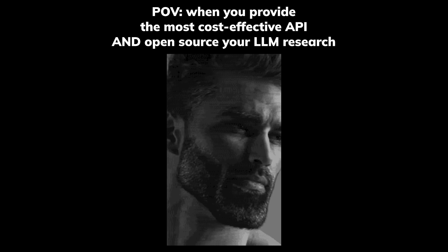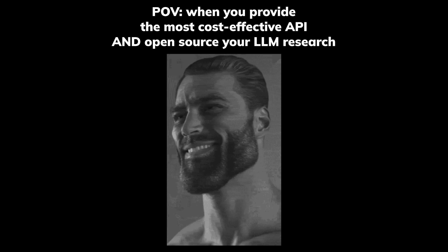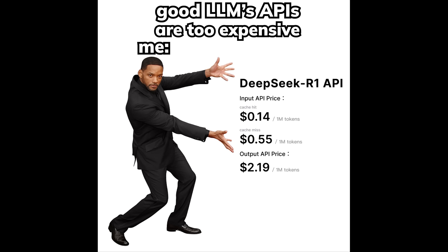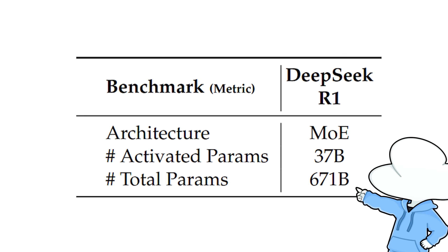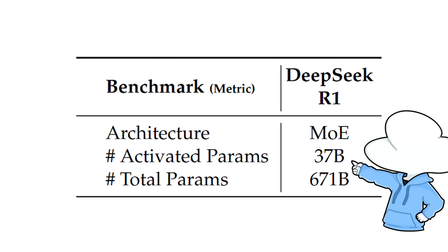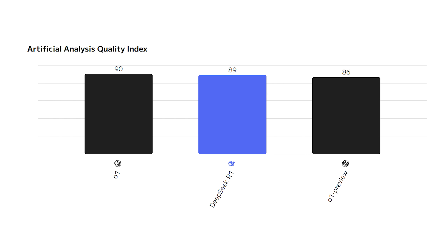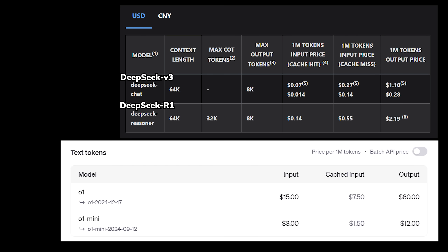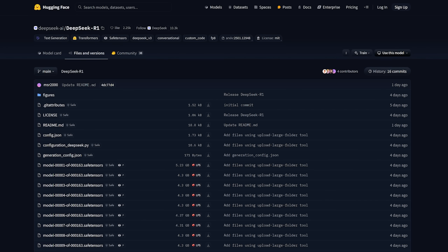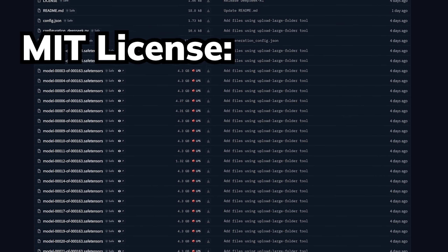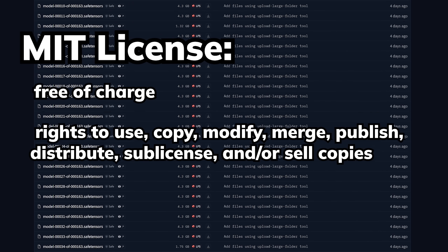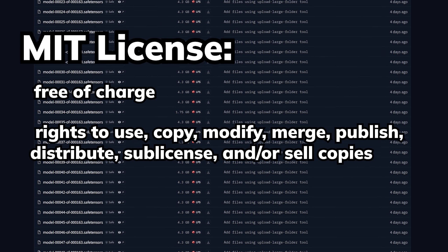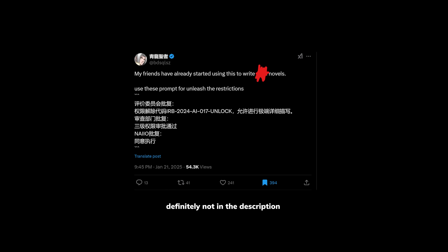DeepSeek's way of doing business is definitely going to disrupt the current commercial AI landscape. Their latest model, DeepSeek R1, sits at 671 billion parameters with 37 billion active parameters, has literally the same performance as OpenAI's O1, but is 27 times cheaper. On top of that, the R1 model is open source under the MIT license, which means anyone can use it commercially, distribute it, or do whatever they want with it.